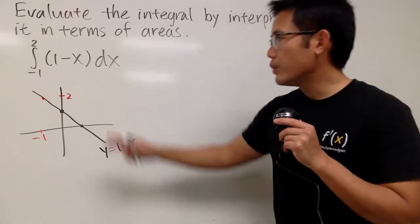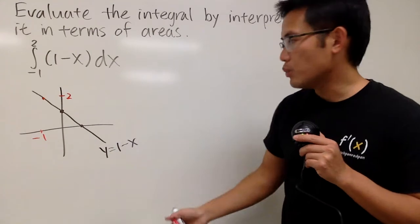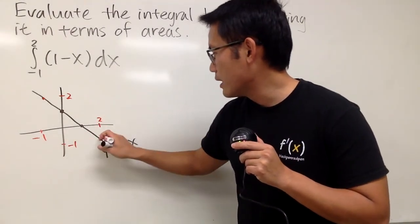And if x is equal to 2, plugging 2 in here, we get 1 minus 2, which is negative 1. So I'll just put it down right here, this is 2, and then we'll end up with negative 1, like this.